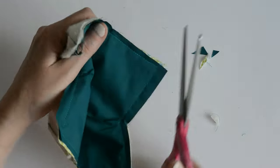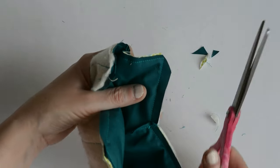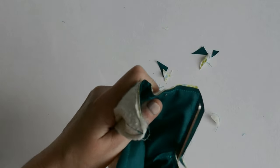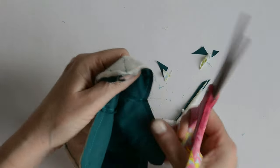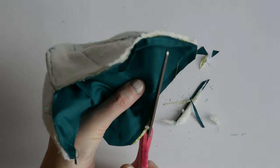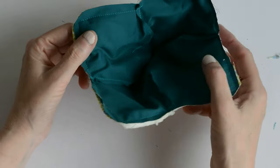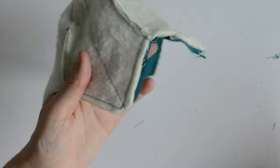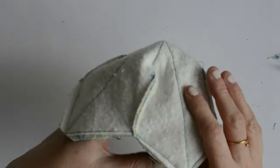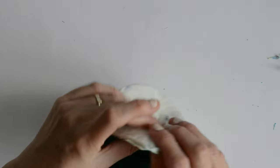And I basted that before this next step which was to machine stitch around the top of the bowl cozy with a quarter of an inch seam allowance, allowing a two inch turning gap along one of the edges. So I'm just trimming the seam allowance having done that so that I can turn the bowl cozy the right side out through that turning gap.